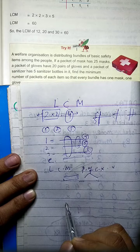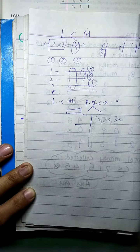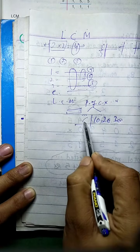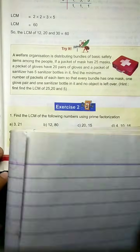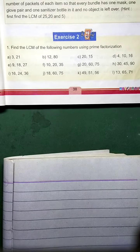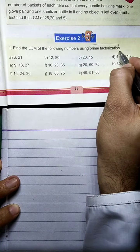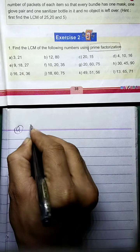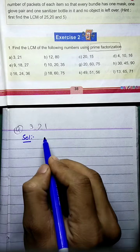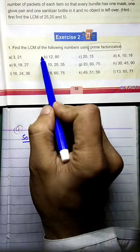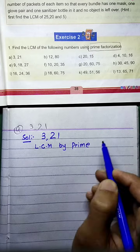This is the prime factorization method for finding LCM. For the division method, for example with numbers 10, 20, or 30, you find all the factors you need. The exercise asks us to find the LCM of the following by prime factorization. The solution starts with 3 and 21.